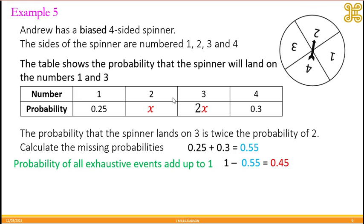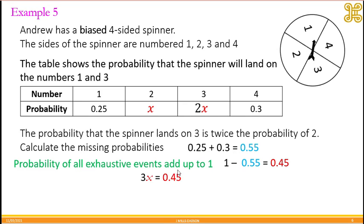This 0.45 is for 2 and 3. They need to be shared. But we have x and 2x, so x and 2x makes 3x. That means 3x represents 0.45.